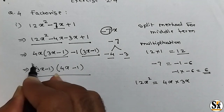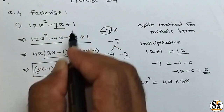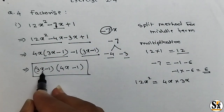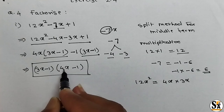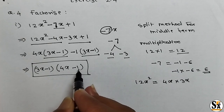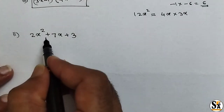These factors cannot be reduced further. These are the final factors. Our answer for this polynomial is: 3x minus 1 is one factor and 4x minus 1 is the other factor.